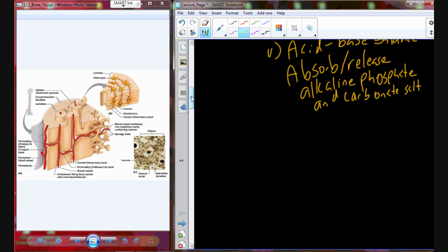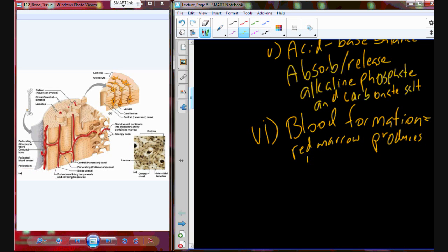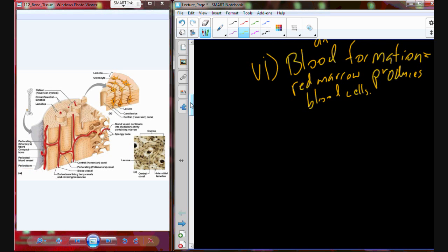The last of the six functions is blood formation. In that blood formation, we have red marrow that's present, red bone marrow, and this is the site for production of red blood cells. Now let's specifically look at bone tissue itself.